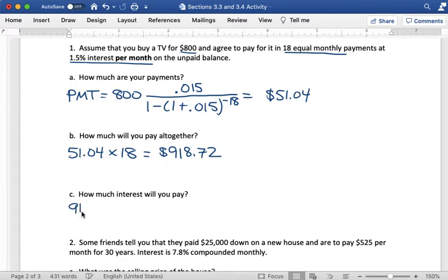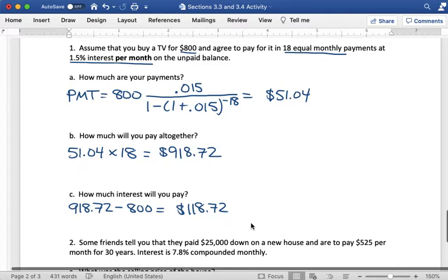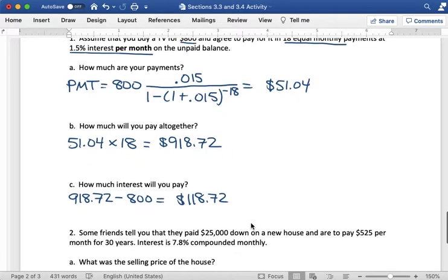So if I subtract $918.72 minus $800, I get $118.72 that I'm paying in interest. So important to think about if you're thinking about doing something like taking a loan to buy a TV, is it worth paying an extra $118 in interest? Or would it be better to save money and just pay for it in cash or save your money until you have enough to buy the TV outright?